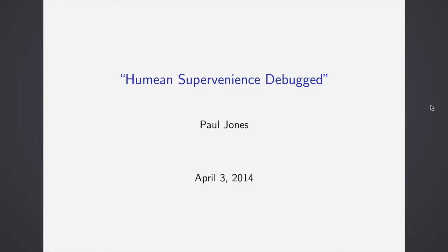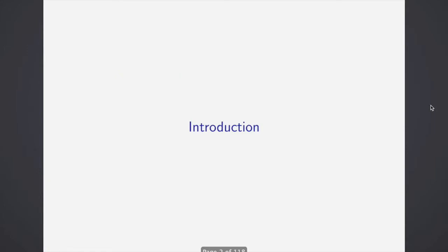Hello, and welcome to the presentation on Humean Supervenience to Bugs. It's a paper by David Lewis, published in 1994 on what he calls the Big Bad Bug. I'm Paul Jones, senior studying philosophy at Rutgers. So let's get started.